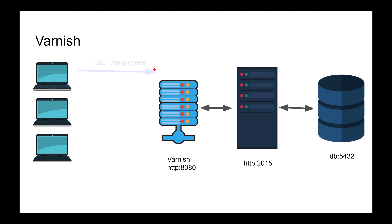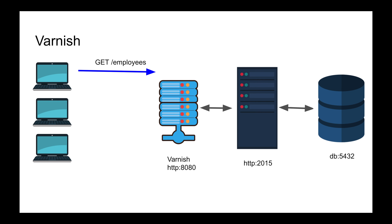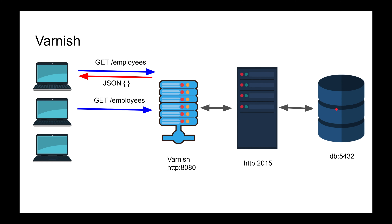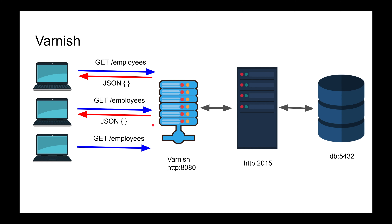You make a request to Varnish — say, give me employees. Varnish checks its cache; if it doesn't have the result, it makes a request to the backend server, which propagates to the database and gets back the results. Varnish caches the employee results. On subsequent requests, it only hits the cache and doesn't bother the server because nothing changed. There's complex cache invalidation happening in the background. Varnish is running on port 8080. If another client makes the same request, Varnish just returns the cached result. Varnish acts as both a reverse proxy and a load balancer.